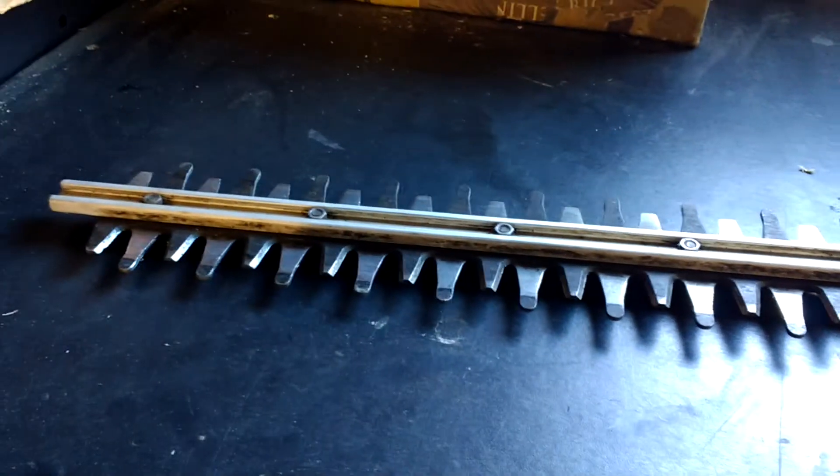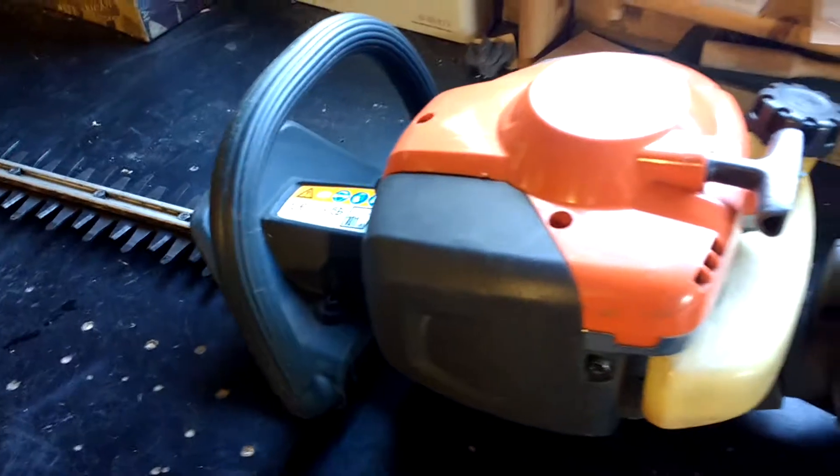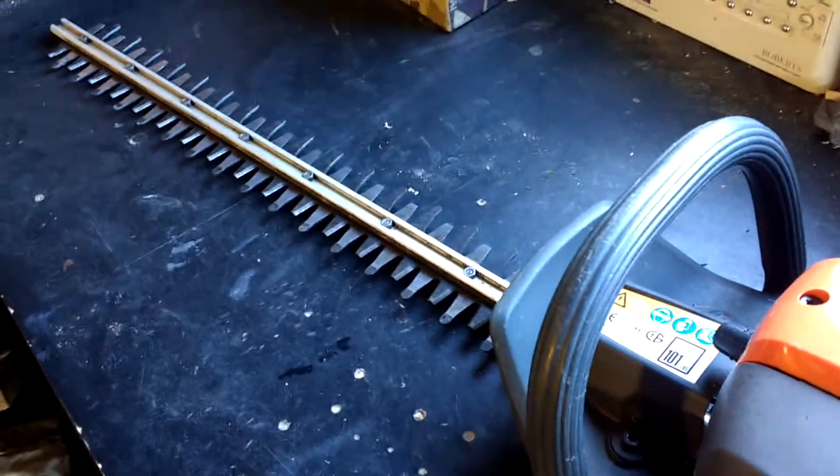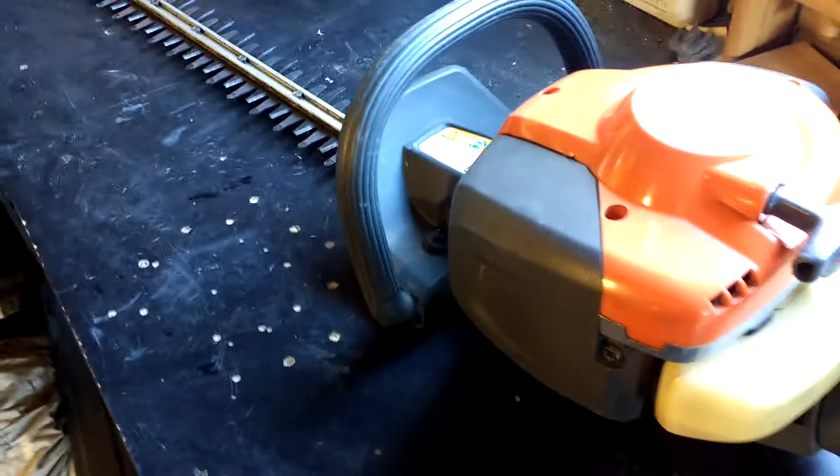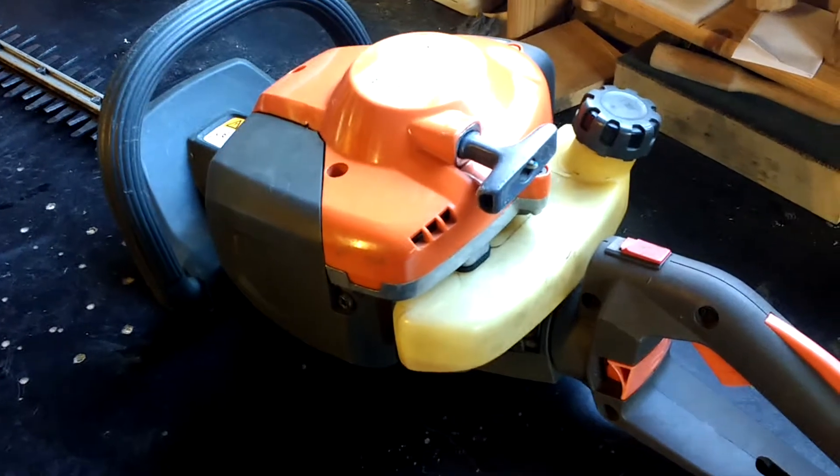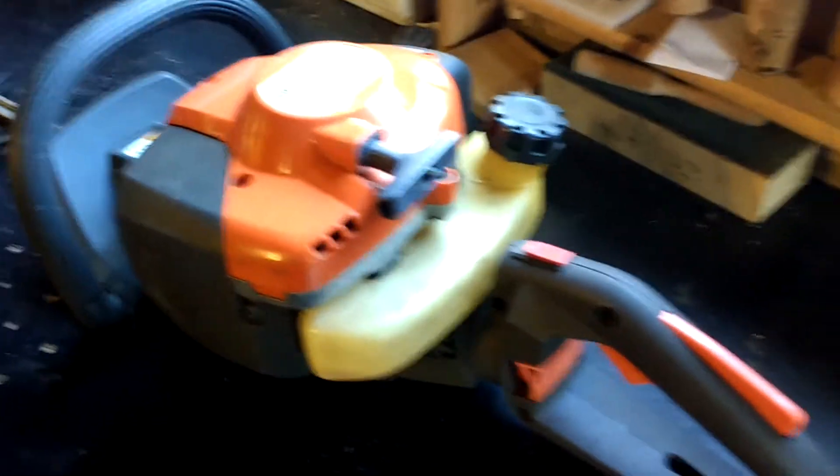And your priming bulb and your choke there, spark plug, front handles, and your blade.